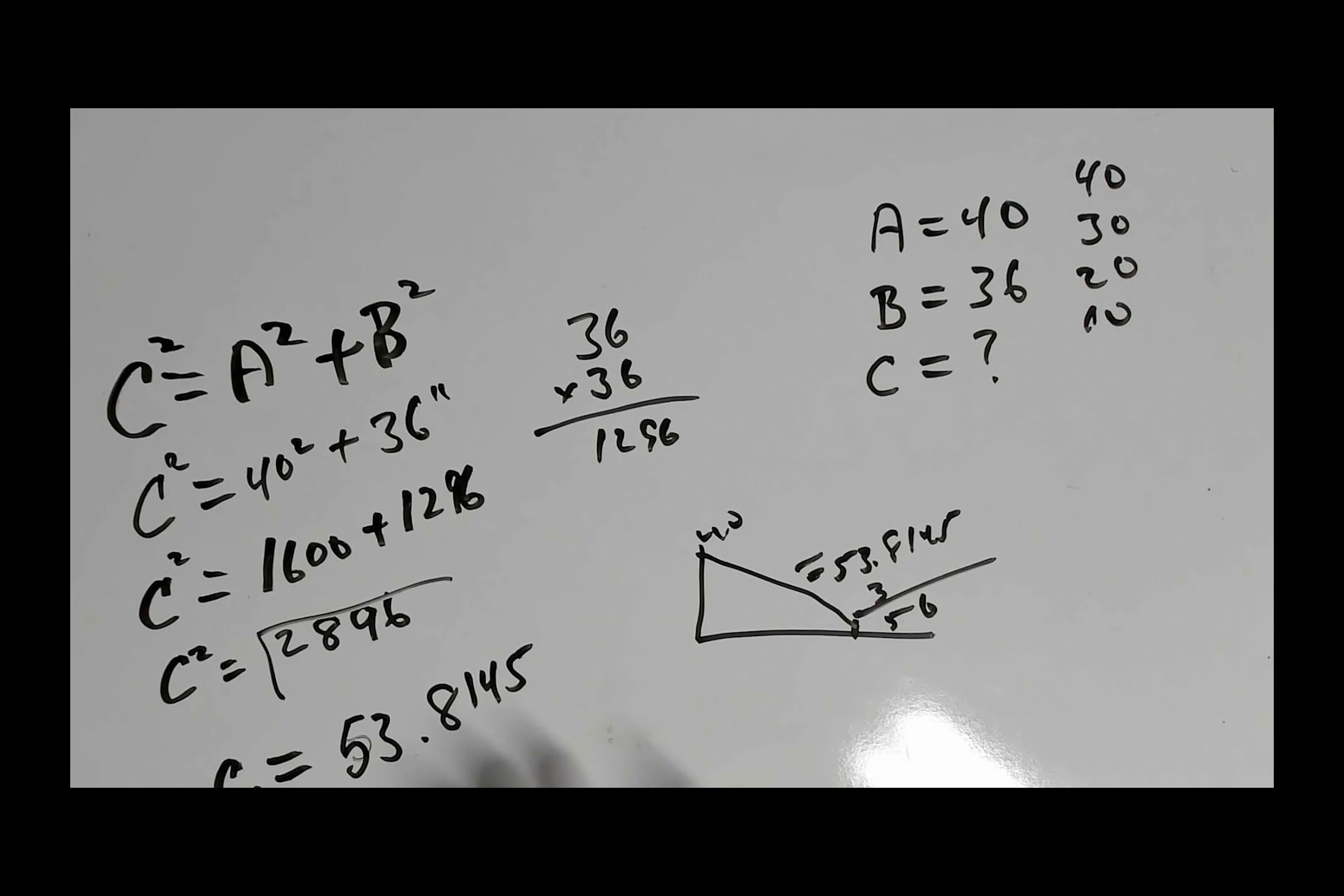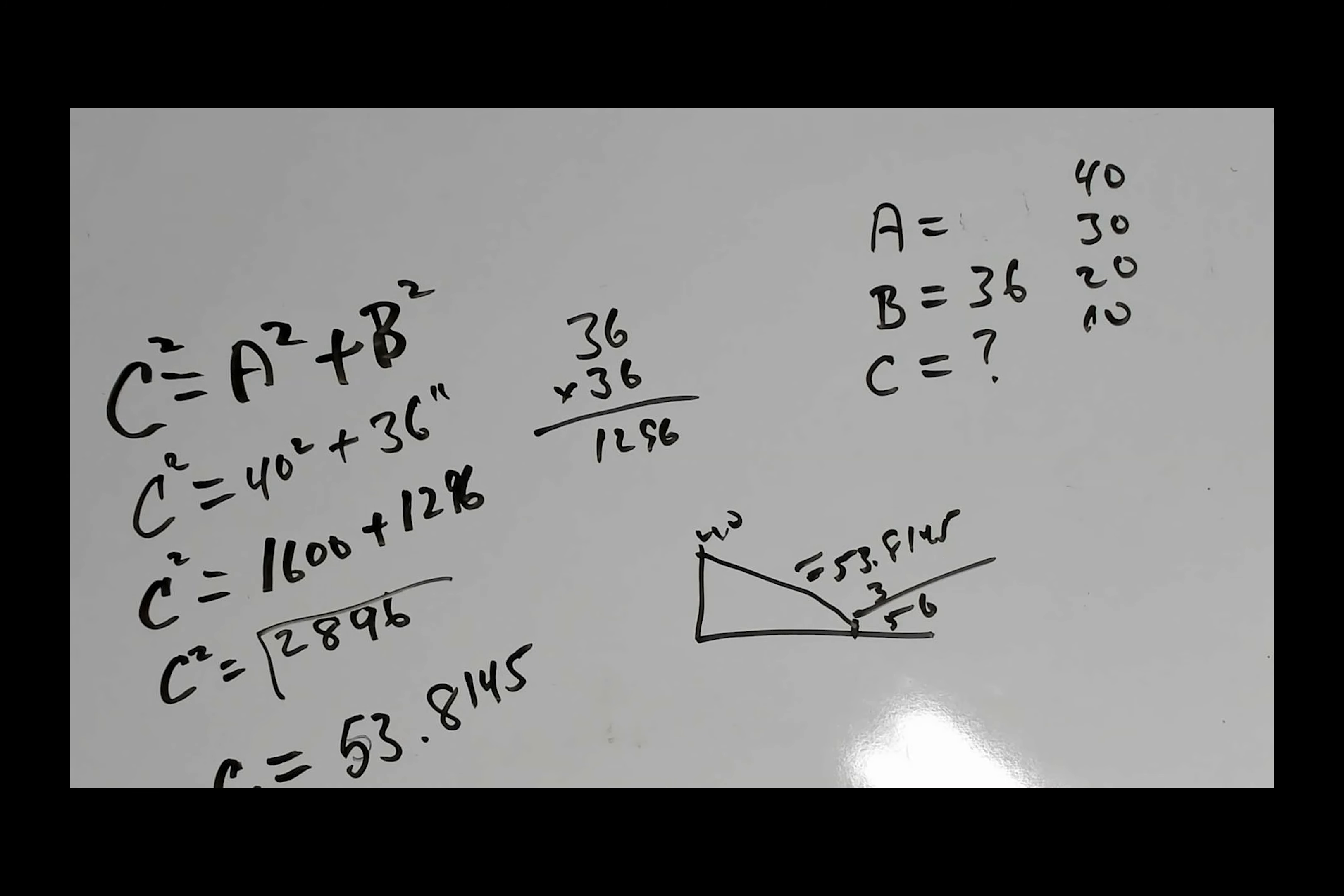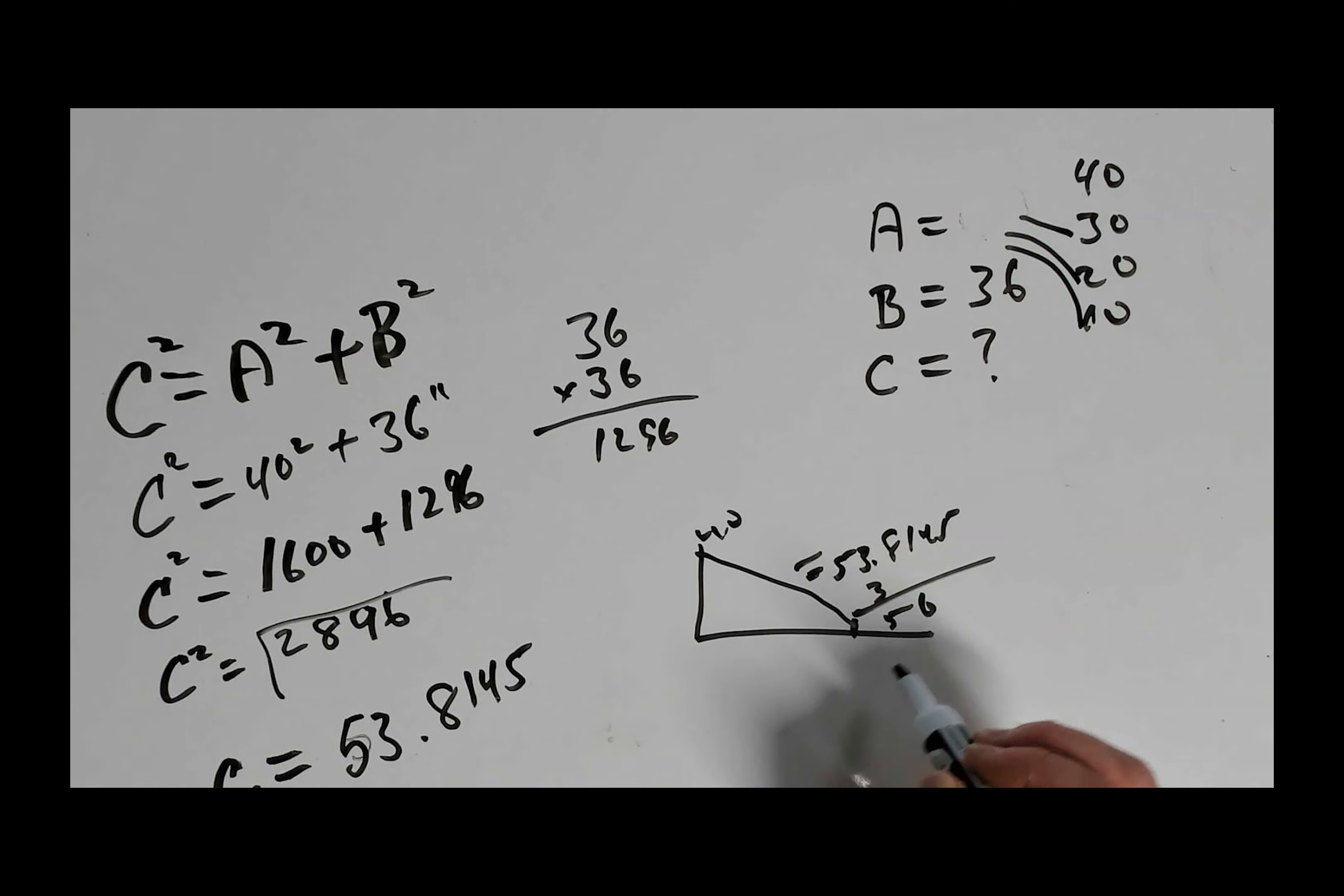So that's how you figure out the calculations here. Now you would go back and do the same calculations again, substituting for the 40 foot on A. You'd substitute and make this 30 foot. Then 20 foot and 10 foot.